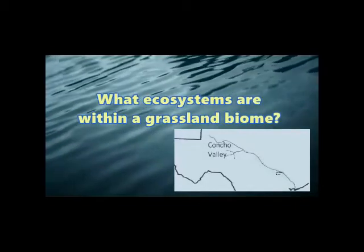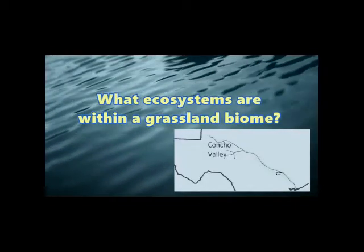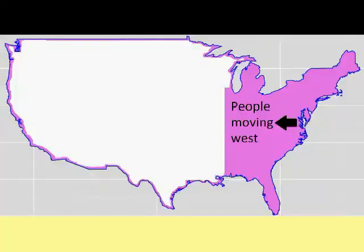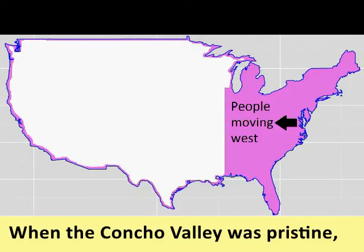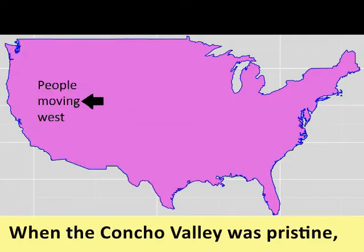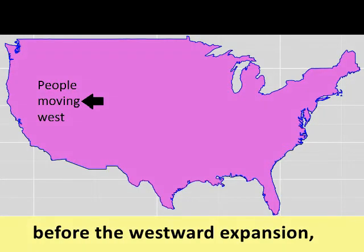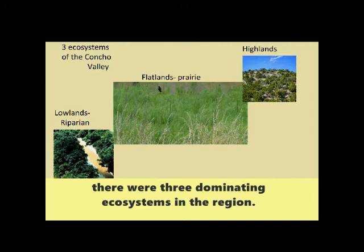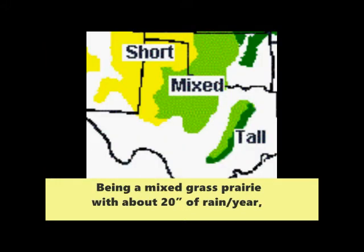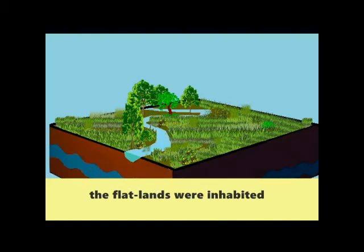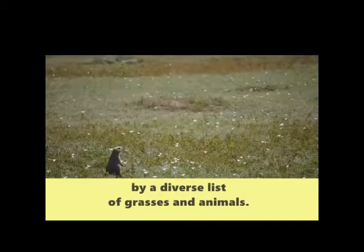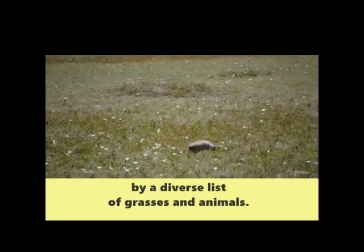What ecosystems are within a grassland biome? When the Concho Valley was pristine, before the Western expansion, there were three dominating ecosystems in the region. Being a mixed grass prairie with about 20 inches of rain per year, the flatlands were inhabited by a diverse list of grasses and animals.